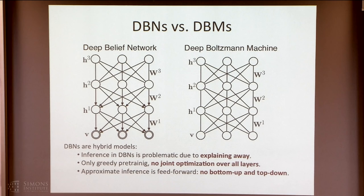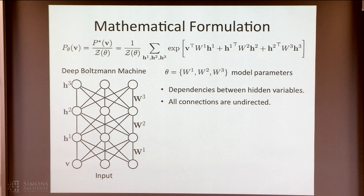So you have to use an approximation, which is a recognition model. There is also greedy pre-training — there is no joint optimization over all layers at the same time. There have been a few attempts, but typically it's a very hard thing to do. The approximate inference is just a feed-forward inference: given the input, you just try to infer the states of the hidden variables in a feed-forward way, and that's your answer.